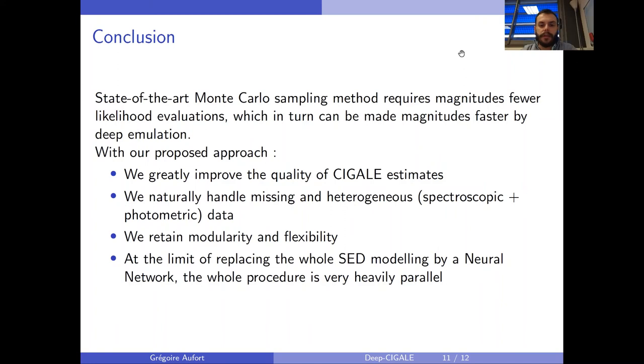This approach has several pros: we greatly improve the quality of CIGALE estimates and improve its flexibility by allowing it to handle spectroscopic and photometric data. It's a very natural way to handle missing data and heterogeneous data - so not the same bands, not the same wavelengths, etc. It keeps the modularity and flexibility of the current CIGALE version.